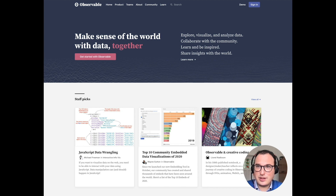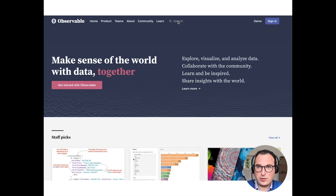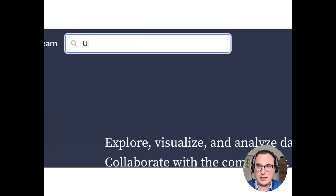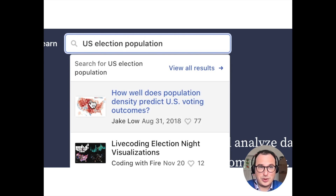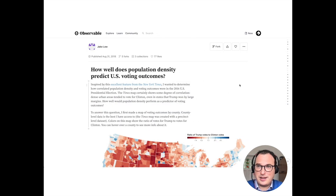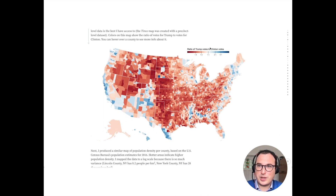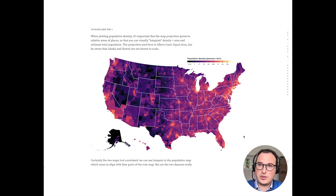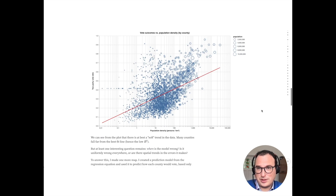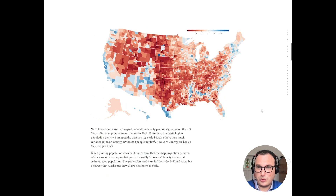So what I did was search for an existing notebook in Observable that was already using US election data as well as some sort of population information. I got pretty lucky and the first result I found was precisely what I was looking for. There was a notebook from Jake Lowe that was displaying the 2016 US election results at the county level on a map, and there was also some data about population in it. That was the best starting point for what I intended to do.